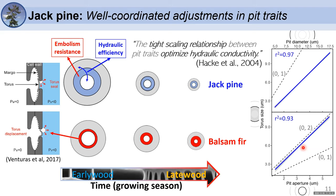The regression slope shows that for a given change, the pit aperture is double the size in Jack Pine — explaining why the species maintains high torus overlap throughout time. In contrast, Balsam Fir shows lower correlation and slope variation, making it more variable in torus overlap and potentially less tolerant to drought and embolized vessels.